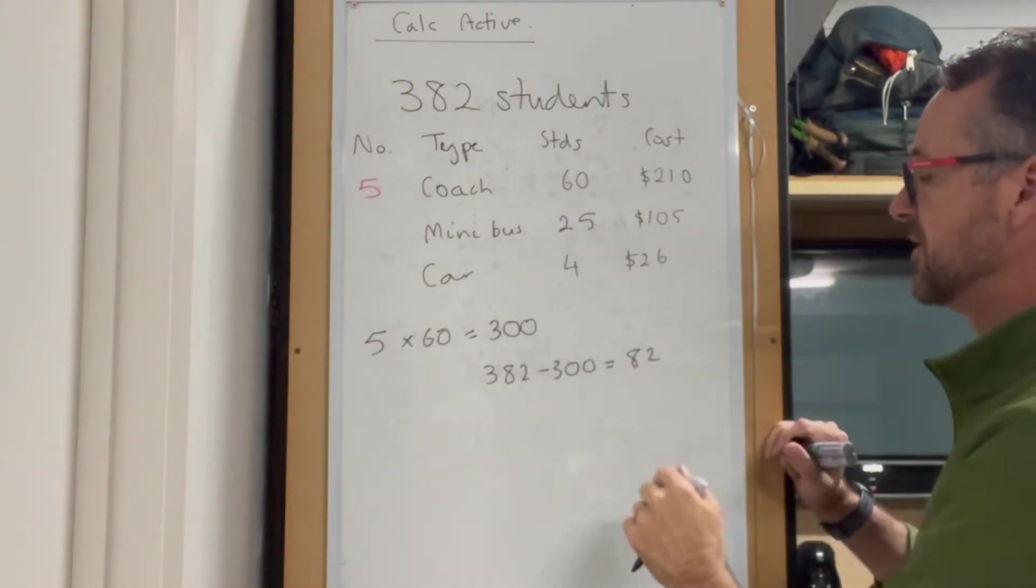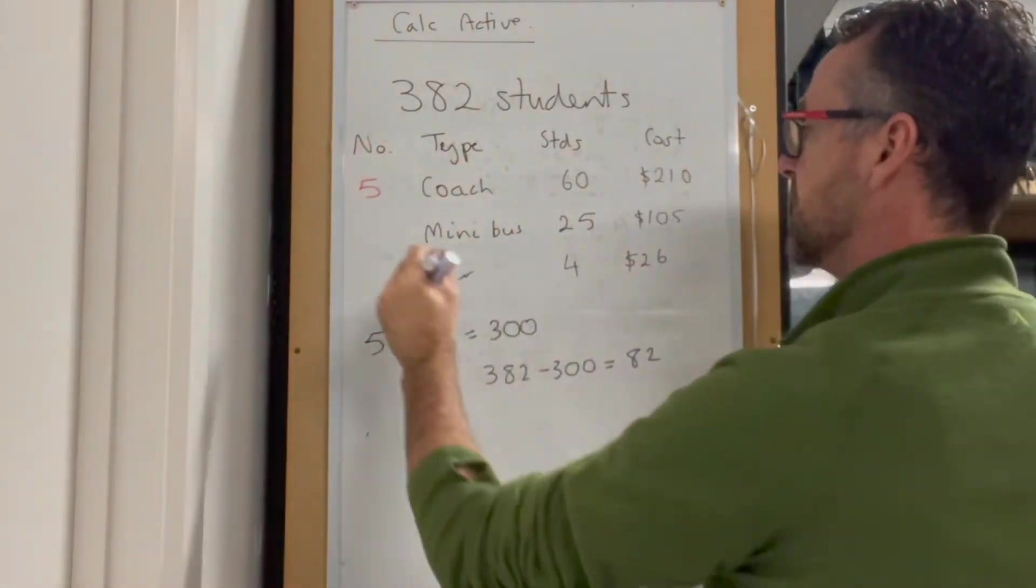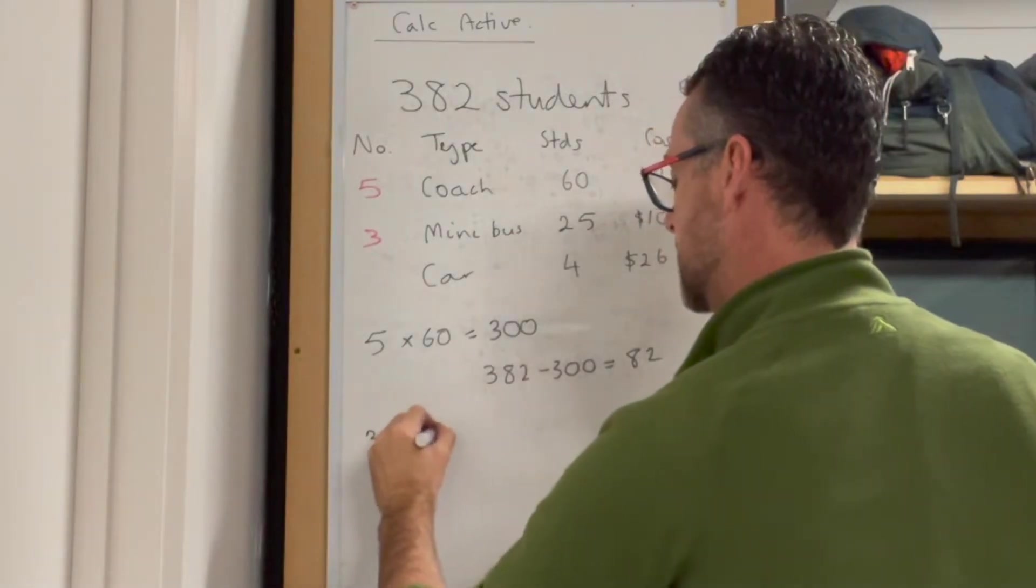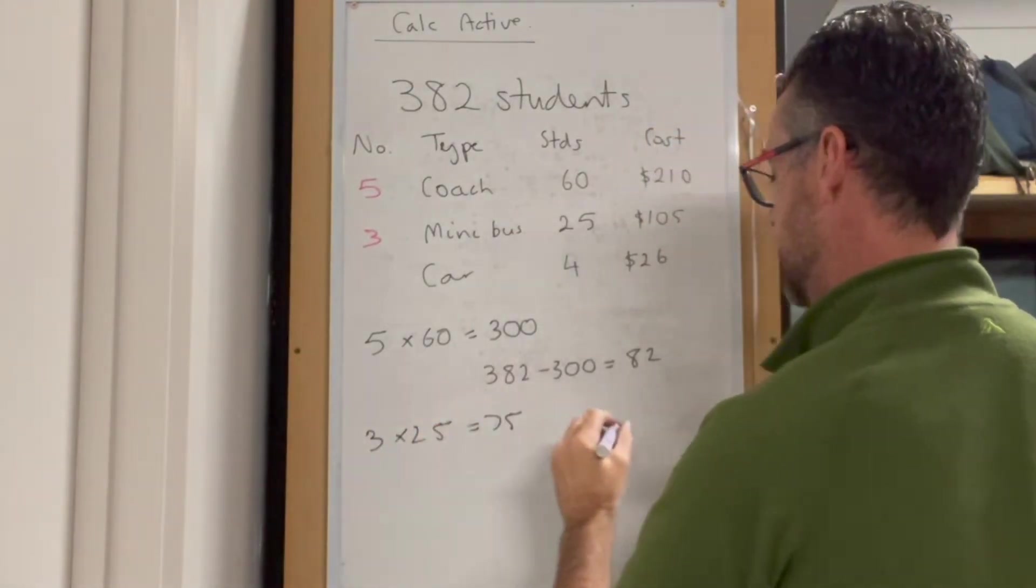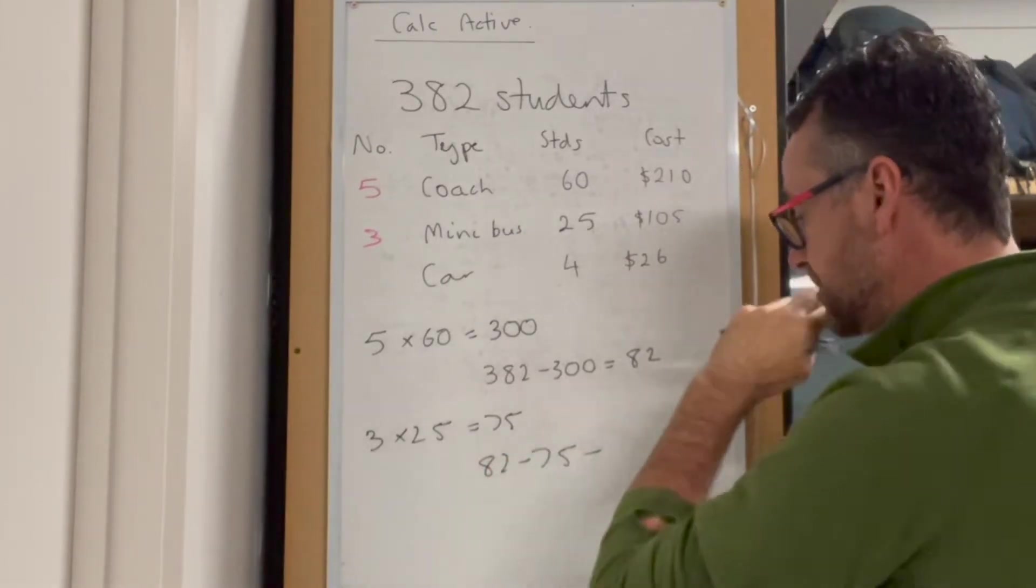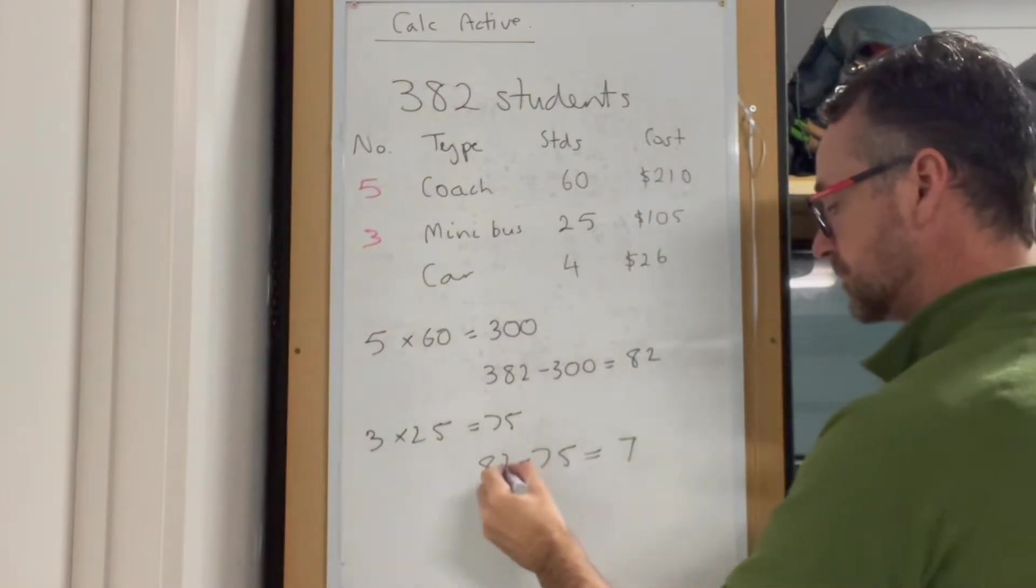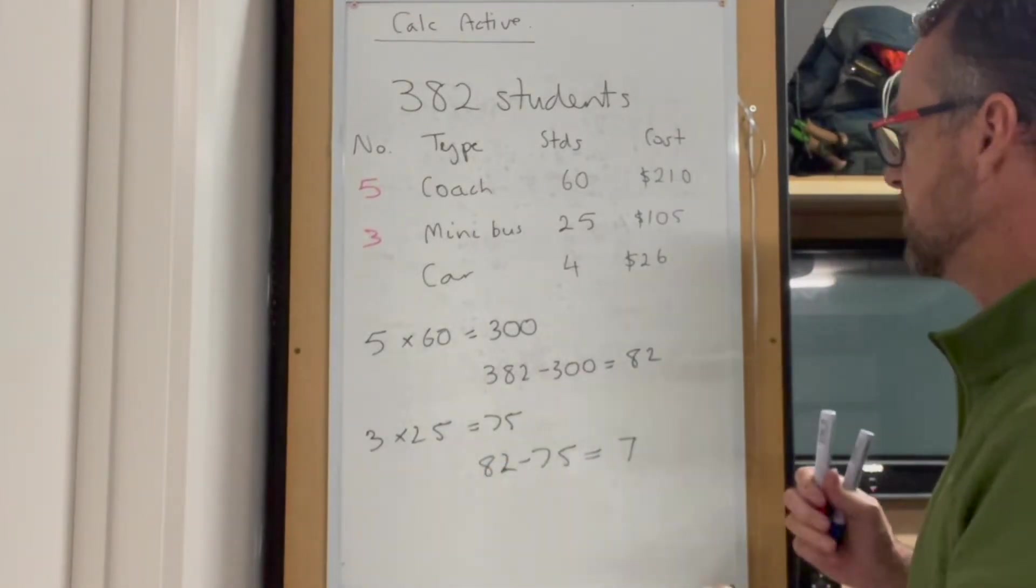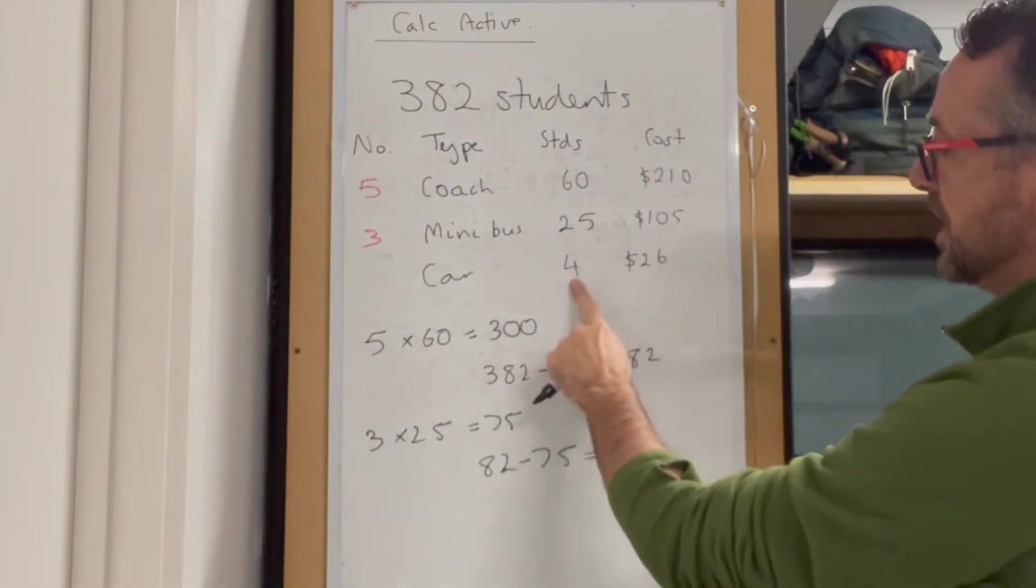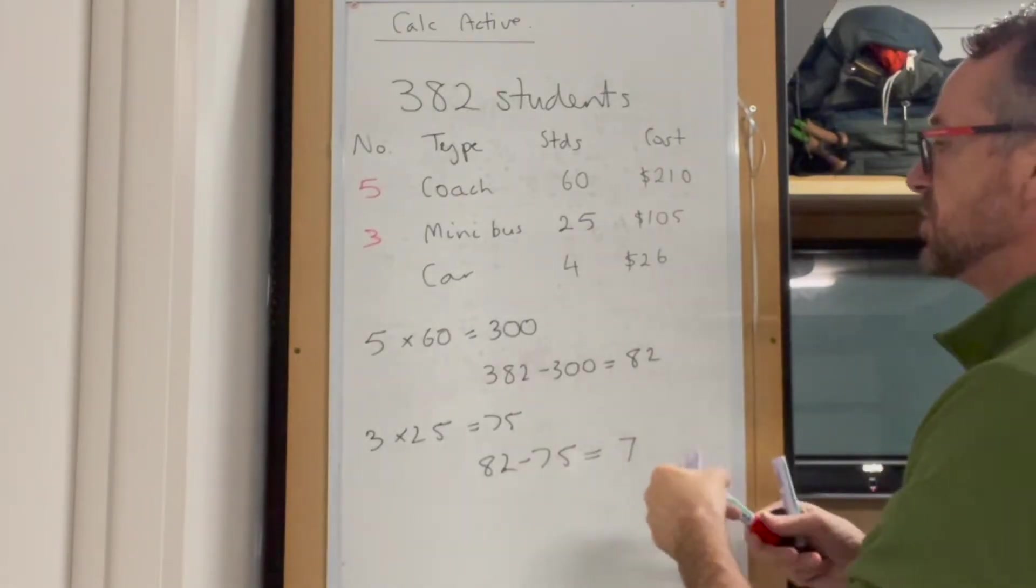Now we want to move multiples of 25. 3 times 25 is 75, so we want 3 minibuses. 82 take away 75 leaves us with 7 students. To move the 7 students, we need 2 cars because that gives us at least 8 spots for the 7 students.